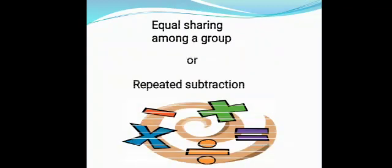In class 2nd we have learnt that division is another name of equal sharing or distribution among a group, or a process of repeated subtraction. To explain division, let's take an example. Suppose you are having 6 apples and you want to give them to your 3 friends equally, so that all 3 friends have equal number of apples. So how will you distribute?